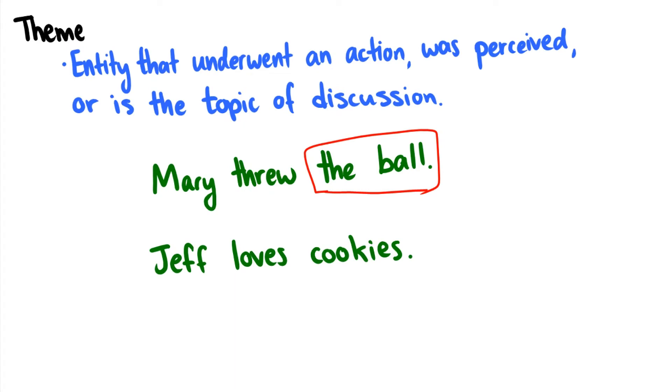In the case of Jeff loves cookies, well, Jeff is an experiencer of the emotion loves. So Jeff here is an experiencer, and what is the thing he's experiencing love for? It's cookies. That's the theme. So the theme is usually the object that undergoes an action or is a thing being perceived. One case of an agent with Mary and one case of an experiencer with Jeff.